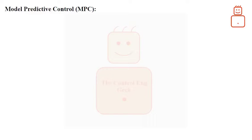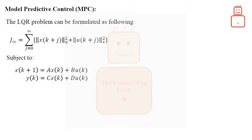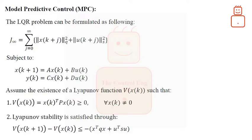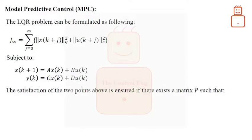Now let us jump to the LQR problem. The LQR problem can be formulated as following. As with the finite MPC problem, we have a cost function on the states and control actions that is subjected only to the process dynamic. Note that the horizon here is infinity. We do not consider constraints on the control actions in the LQR problem, at least in this video. Now assume the existence of a Lyapunov function V at sample k such that: this function is non-negative for all x that is not equal to zero, and the Lyapunov stability is satisfied through this inequality.